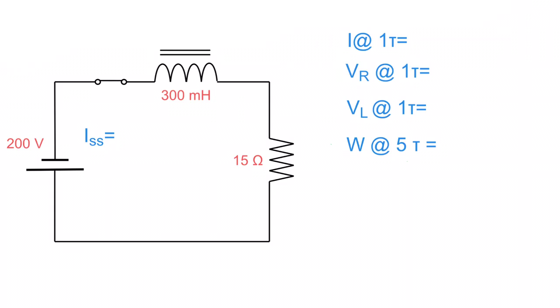When working these problems out, the first thing to figure out is ISS — our steady state current. Remember that inductance opposes any change in current, so everything is based off ISS. With 200 volts and 15 ohms, that works out to 13.33 amps. That's our steady state current.